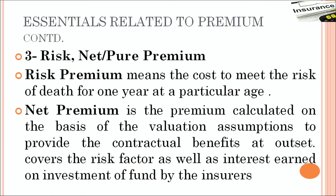What is meant by risk net or pure premium? Risk premium means the cost to meet the risk of death for one year at a particular age. We have different age brackets and accordingly there are different risk premiums tabulated with the insurer. Net premium is the premium calculated on the basis of valuation assumptions to provide the contractual benefits at outset. It covers the risk factor as well as the interest earned on investment of funds by the insurers. In risk premium, only the cost of covering the death or mishap was considered, but in net premium, the expected return out of those investments is also considered.